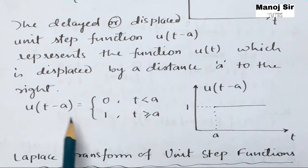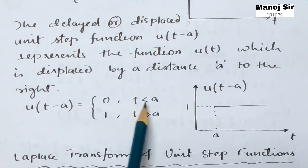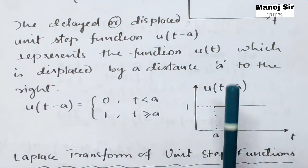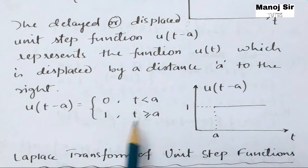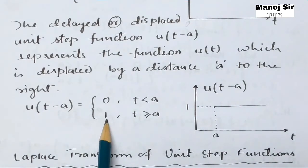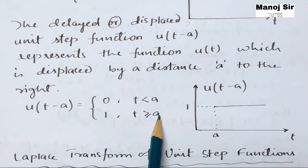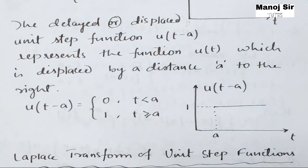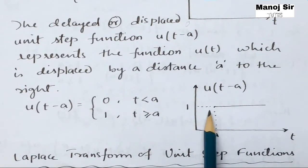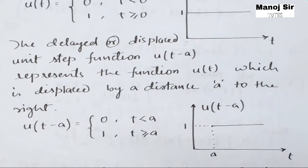u(t - a) is 0 when t is less than a. u(t - a) becomes 1 when t is equal to or greater than a. From the graph you can see the value of u(t - a) becomes 1 at t equals a.